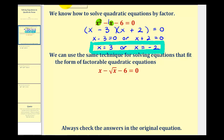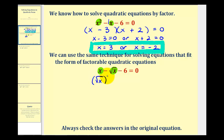For example, if we want to solve x minus the square root of x minus six equals zero, it's not a quadratic equation, but it does fit the form of a quadratic, because if we square the square root of x, it equals x. That means we can rewrite this as the square root of x, squared, minus the square root of x minus six equals zero. This fits the form of a factorable quadratic.